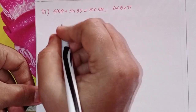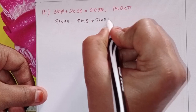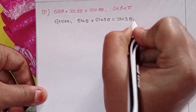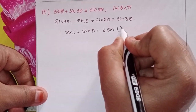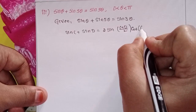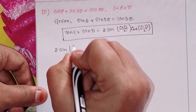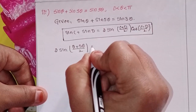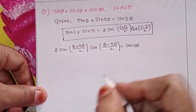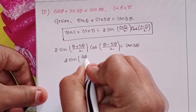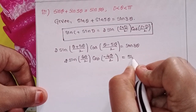Third equation: sinθ + sin5θ = sin3θ. Given sinθ + sin5θ = sin3θ. Applying the formula sin C + sin D = 2·sin((C+D)/2)·cos((C-D)/2), we get 2·sin((θ+5θ)/2)·cos((θ-5θ)/2) = sin3θ, which is 2·sin(6θ/2)·cos(-4θ/2) = sin3θ.